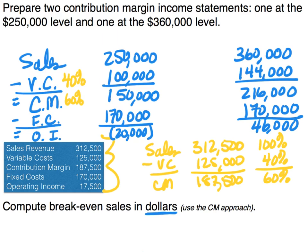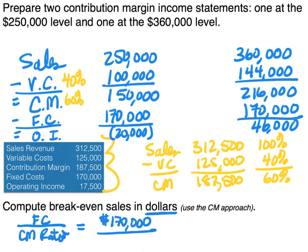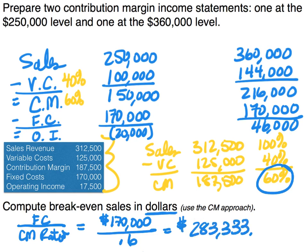Using the contribution margin approach to calculate break-even in sales dollars: fixed costs of $170,000 divided by the contribution margin ratio of 60% (or 0.6) gives us a break-even point of $283,333.33.